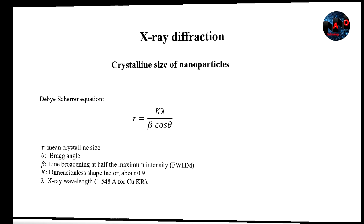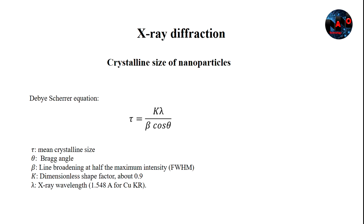In the XRD pattern, the Debye-Scherrer equation is used to calculate the crystalline size of nanoparticles. In this equation, tau is the mean crystalline size, theta is the Bragg angle, beta is the line broadening at half the maximum intensity, or FWHM. K is a dimensionless shape factor, about 0.9, and lambda is the X-ray wavelength.